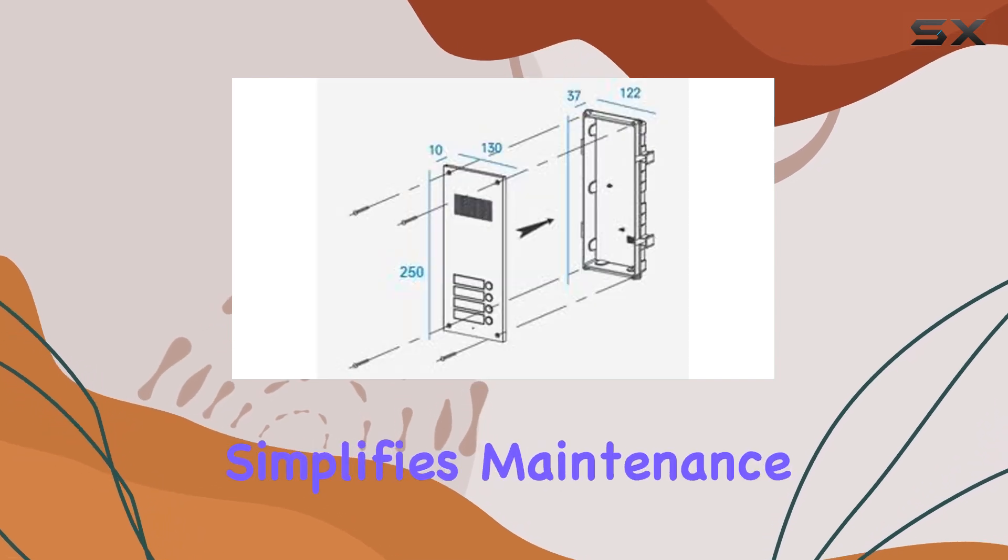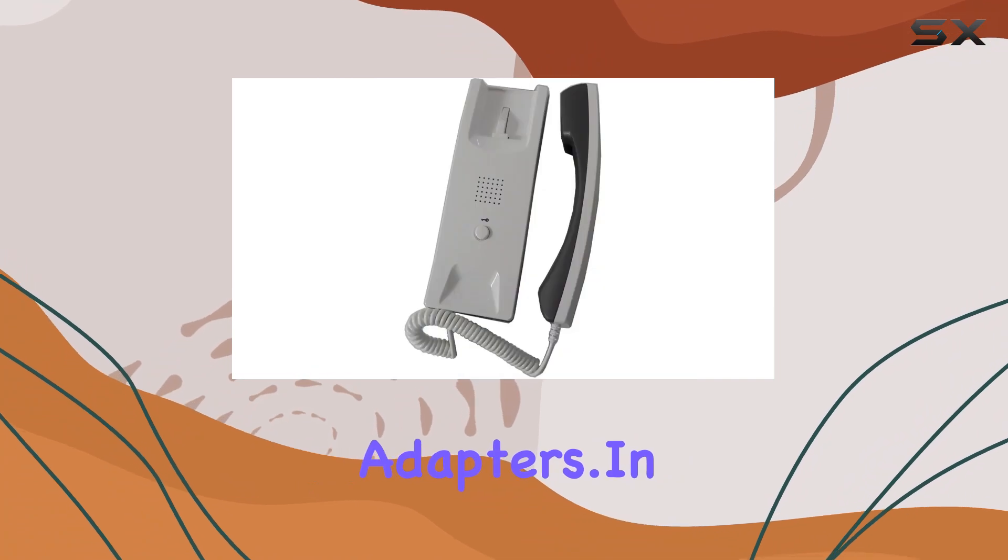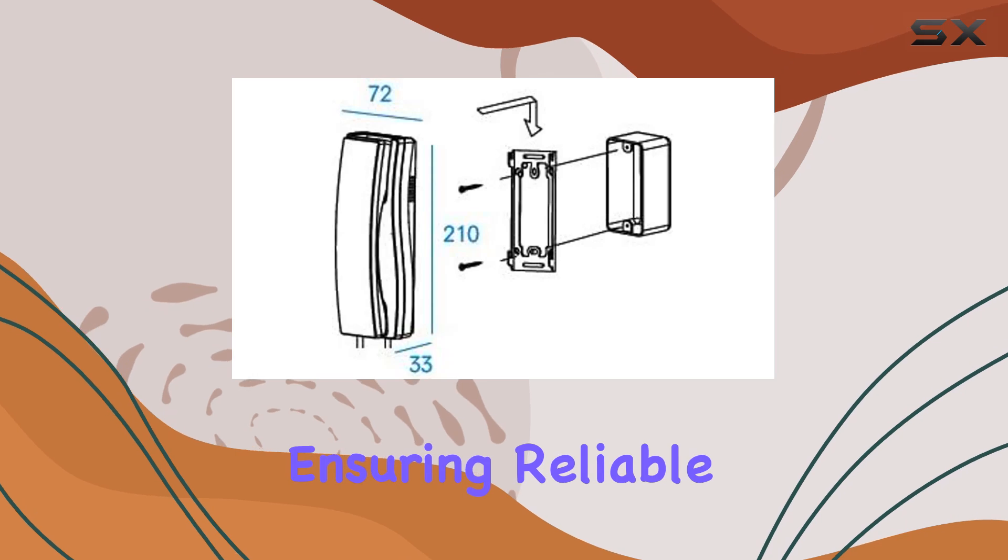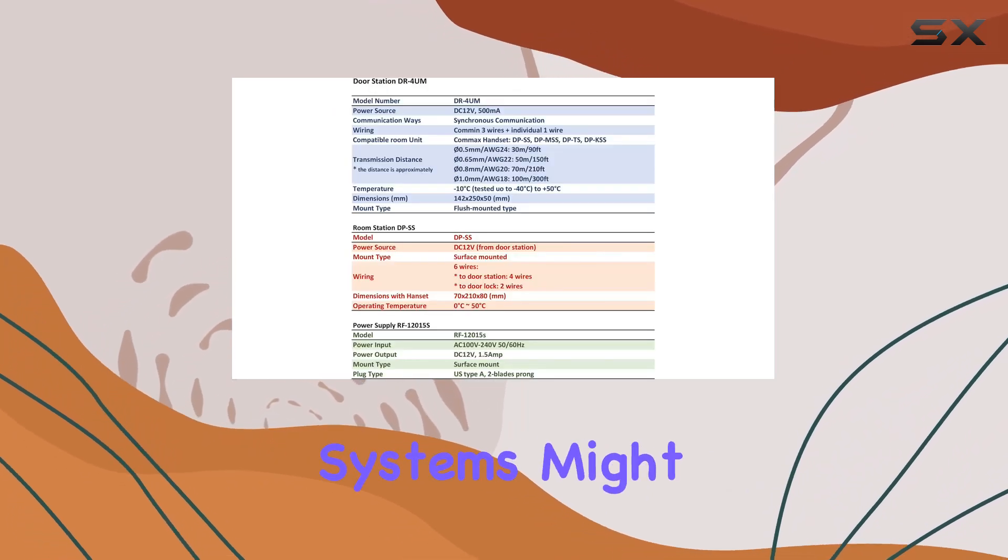This centralized power setup simplifies maintenance and reduces clutter from multiple power adapters. In terms of connectivity, the ComMax system operates via wired connections, ensuring reliable communication without the potential interference that wireless systems might encounter.